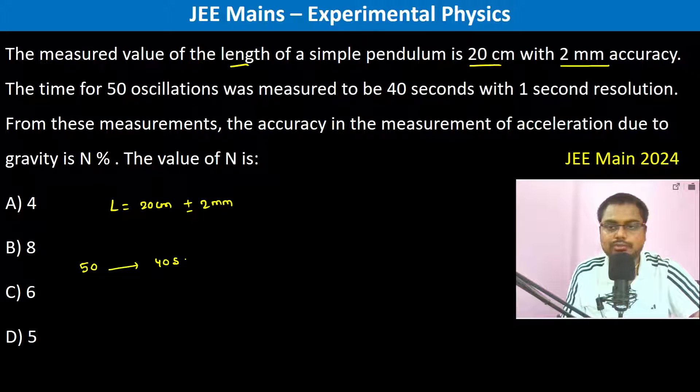With one second resolution, 40 seconds plus minus one second. From these measurements, the accuracy in the measurement of acceleration due to gravity is n percent. So you have 50 into t.